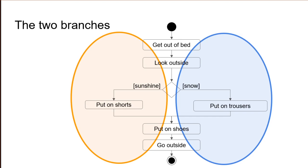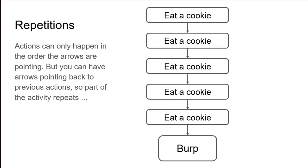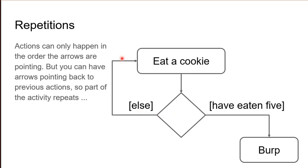And that concludes the basics of activity diagrams. So far they are quite similar to other kinds of flowcharts or decision trees you might have come across. But they do have some more advanced features that make them extra convenient for describing games. First, we have the possibility of repetition. Actions can only happen in the order the arrows are pointing, but we can have arrows pointing back to earlier actions so part of it repeats. Like this example where I have to eat five cookies before burping — rather than having five identical actions, I have a loop where the same action repeats.